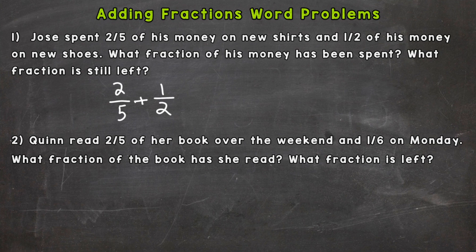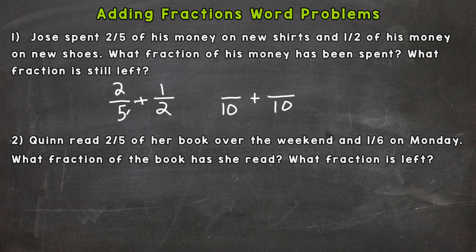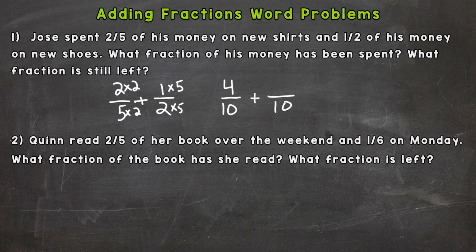We do not have a common denominator, so we need to find one for five and two. The common denominator is going to be ten. I'm going to rewrite the problem with a common denominator of ten. For two-fifths: five times two gives me ten, so I do that to the top — two times two is four, so two-fifths is equivalent to four-tenths. For one-half: two times five is ten, do that to the top — one times five is five. Now we're ready to add because we have a common denominator.